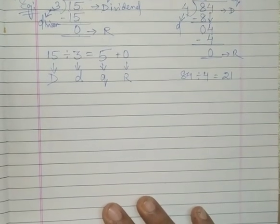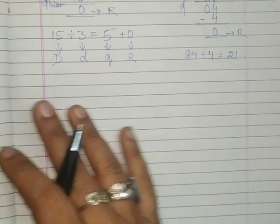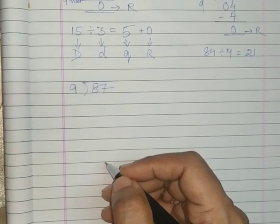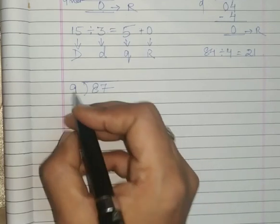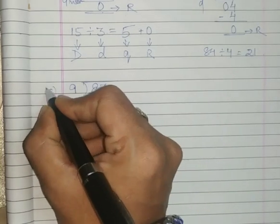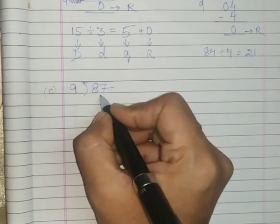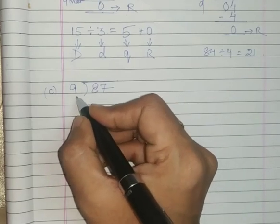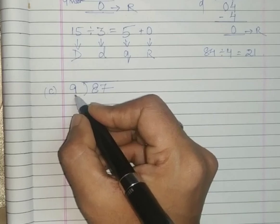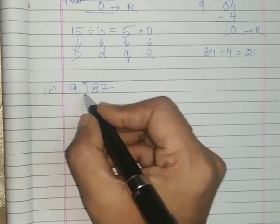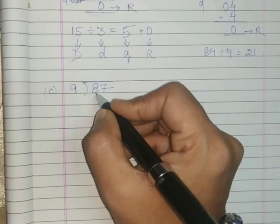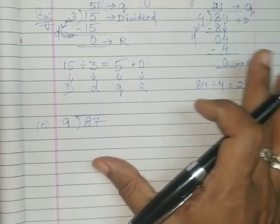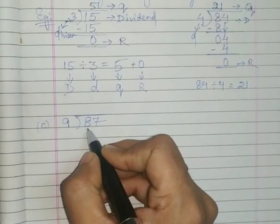You can go for another example. Now the third example is 87 divided by 9. Look for the multiplication table of 9. You cannot divide one by one as you have done in the previous example because 8 is less than 9, so you have to take both the digits at once.